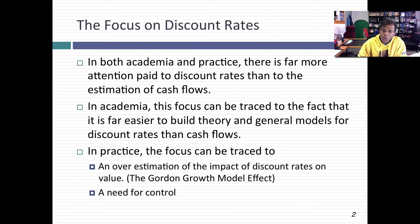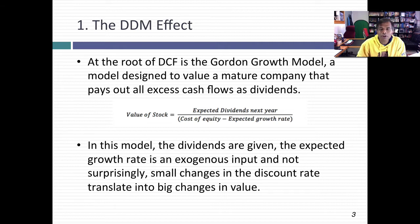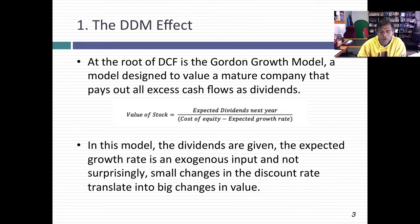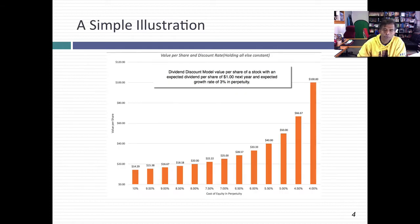So why do we spend so much time on the discount rate part of DCF? I think there are two reasons. The first goes back to how we all got introduced to discounted cash flow valuation. The very first DCF model I was taught was called the Gordon growth model — a stable growth dividend discount model. It's a clever way of introducing DCF because it makes your cash flows into expected dividends, and in the denominator you have the cost of equity minus the growth rate. Unfortunately, it's a model that frames our thinking about discounted cash flow valuation.